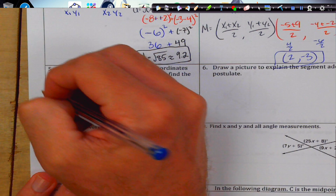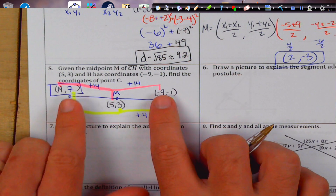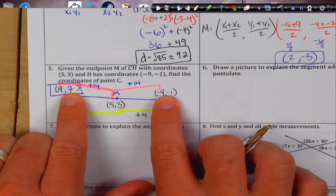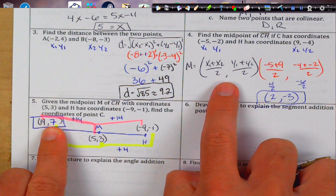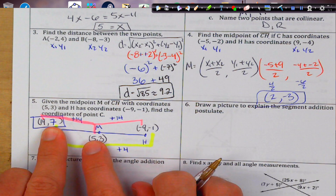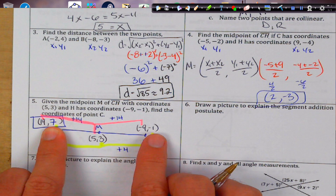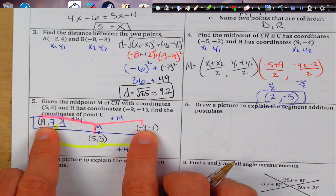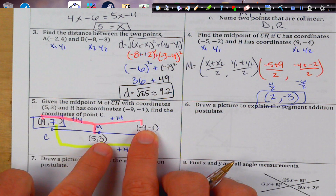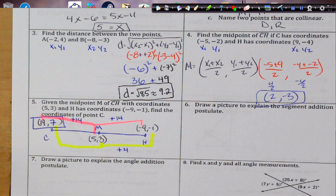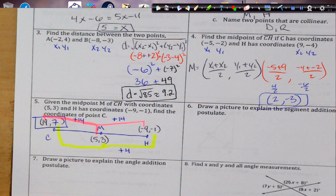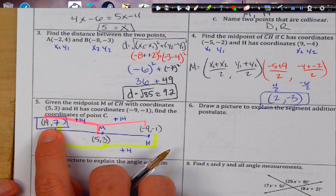We can check by plugging into the midpoint formula: (19 + (−9))/2 = 10/2 = 5 ✓, and (7 + (−1))/2 = 6/2 = 3 ✓. So our answer is (19, 7).